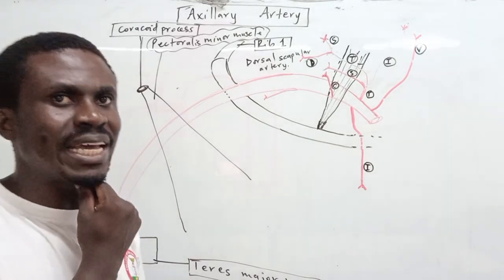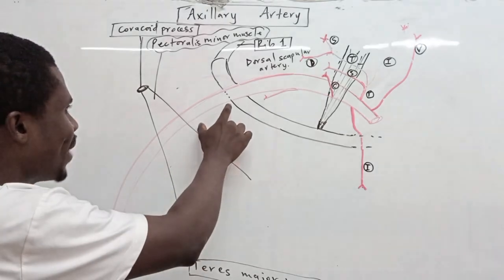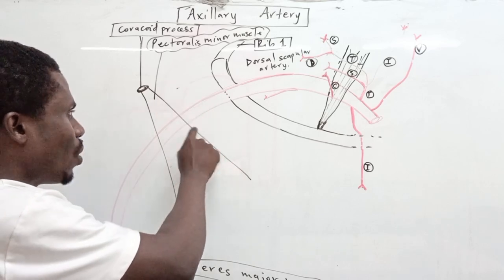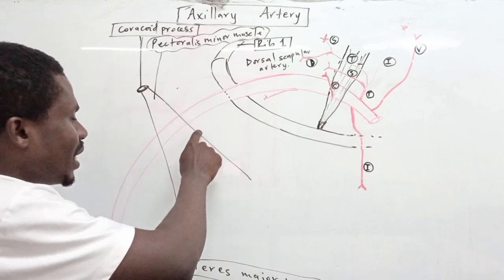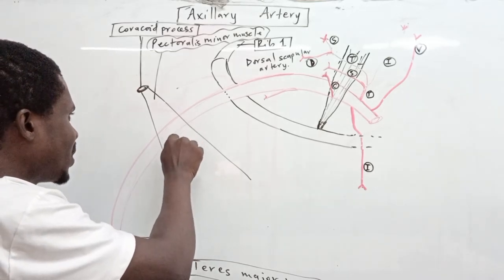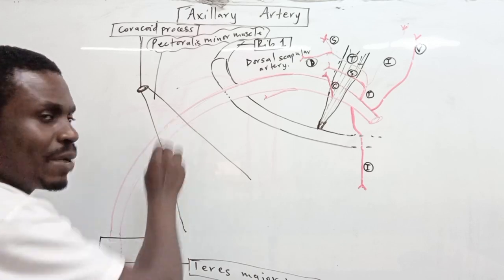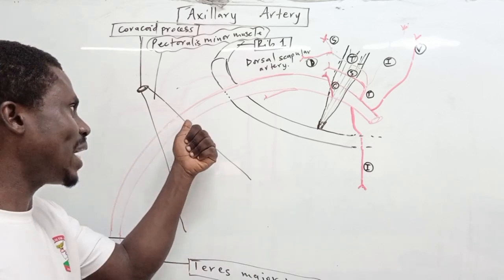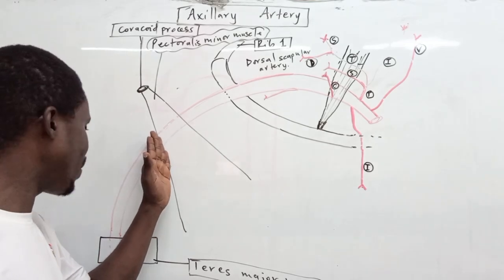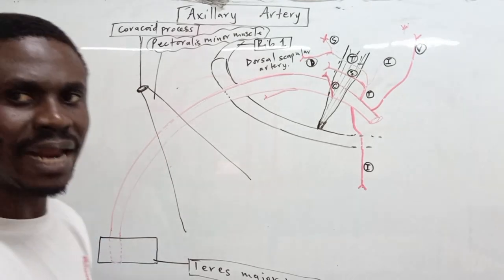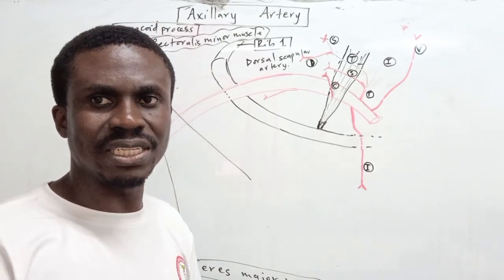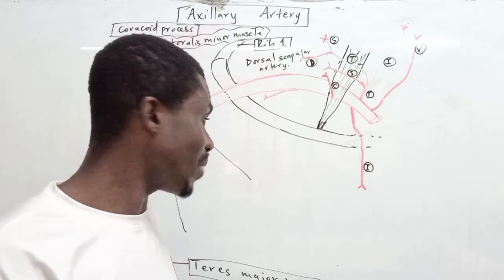The first part of the axillary artery runs from the outer border of the first rib to the medial border of pectoralis minor. The second part is deep to pectoralis minor, from its medial to lateral border. The third part runs from the lateral border of pectoralis minor to the lower border of teres major.